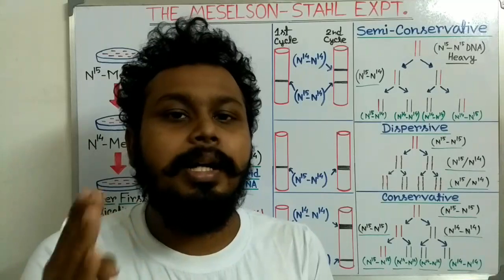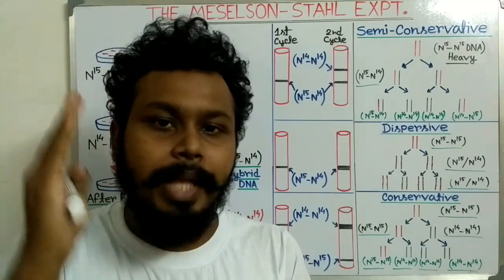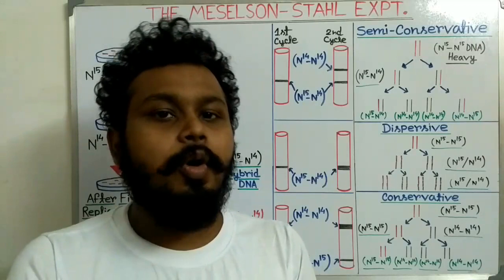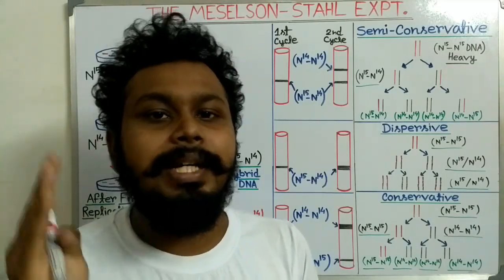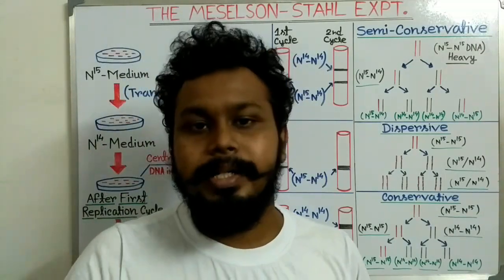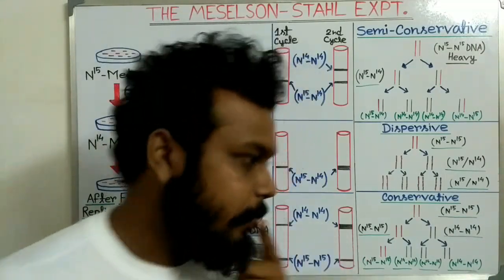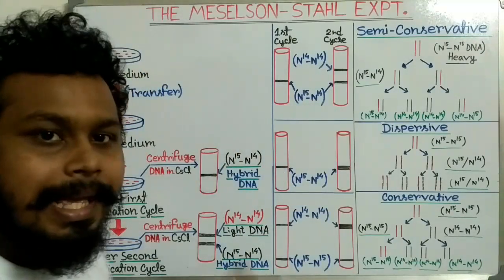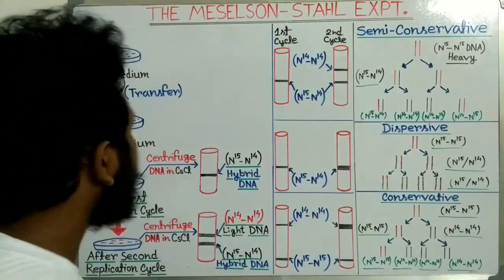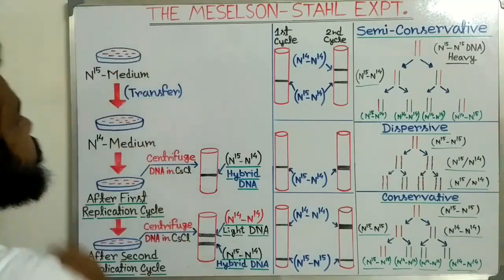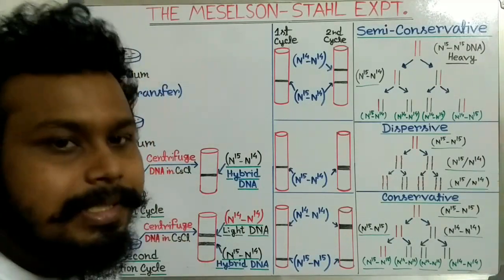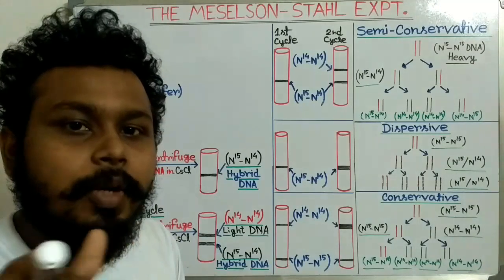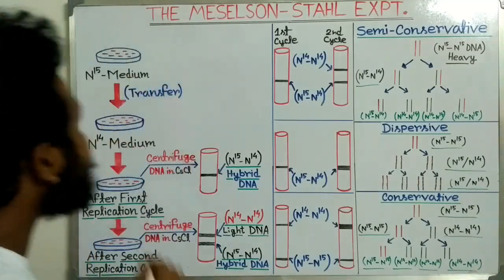From these three models, which one is the correct model? To prove that, Meselson and Stahl showed a unique experiment with E. coli bacterial cells. So now let's come to the main experiment of Meselson and Stahl.